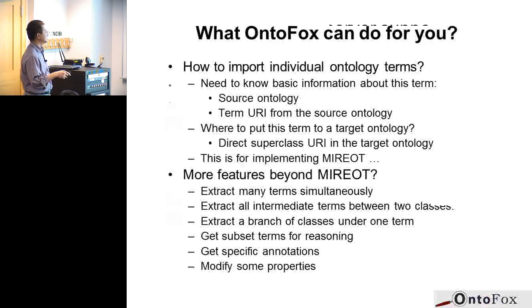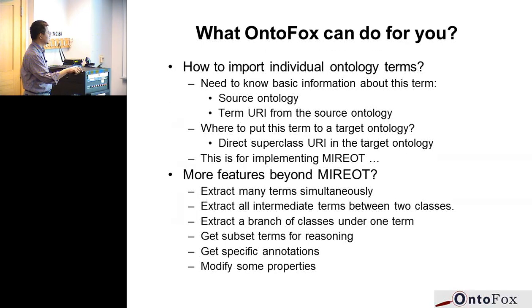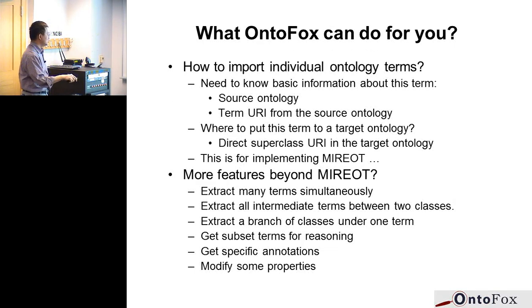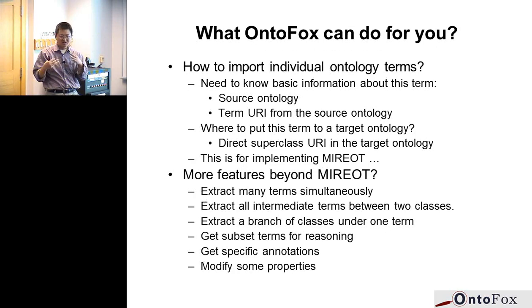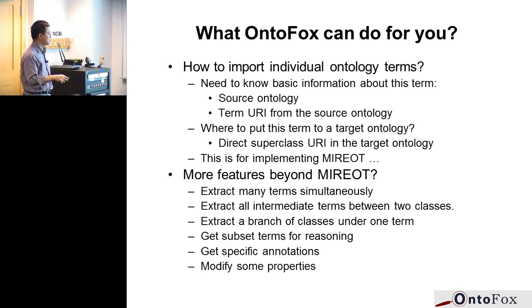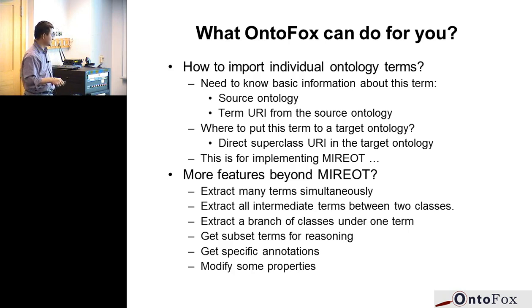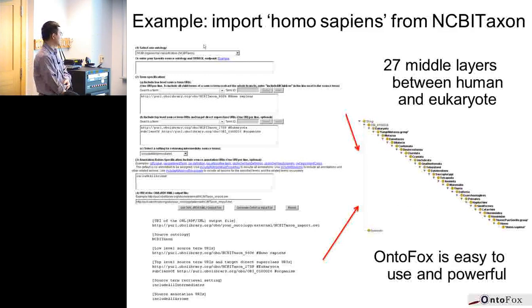OntoFox can get individual terms by providing URIs and labels, and automatically extract terms into your own ontology. It can also extract multiple terms at once. Beyond just the terms you need, for logical reasoning to work well you need to get additional related terms — this is called modularization, which MIREOT alone cannot do. Our program can get all those terms needed to define your subset, and can also get annotations.